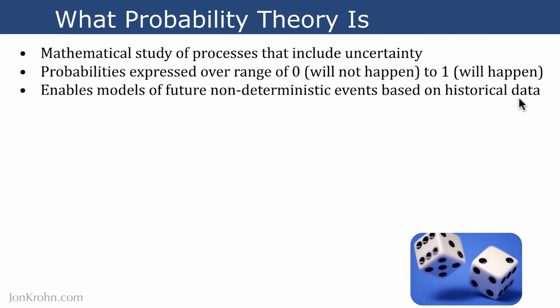This means that we can take some data that we've collected about some related events, and then we can build a model to try to predict future events or events that are outside of our training sample, and then we can get probabilities between 0 and 1 that will guide the probability of that future non-deterministic event.